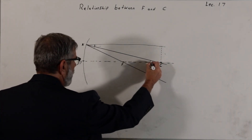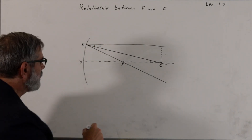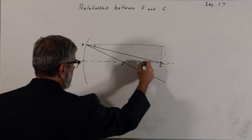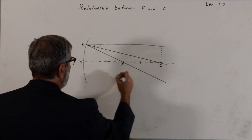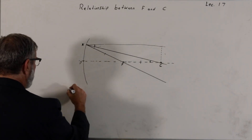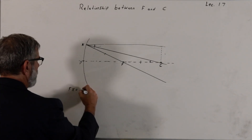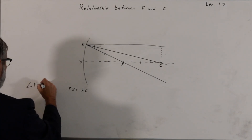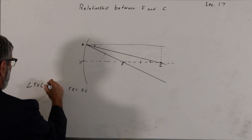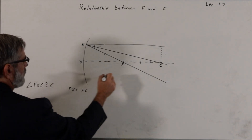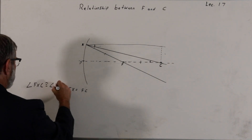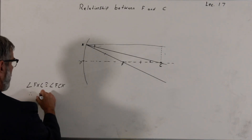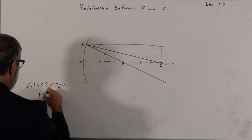Since these angles here and here are opposite interior angles, they are equal. And since this angle is also equal to this angle, that means that side fc has the same length as fx. So fx is equal to fc, because the angle fxc is congruent to the angle fcx.